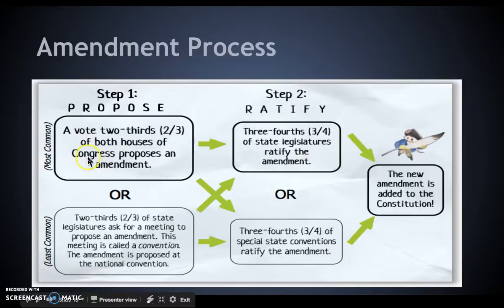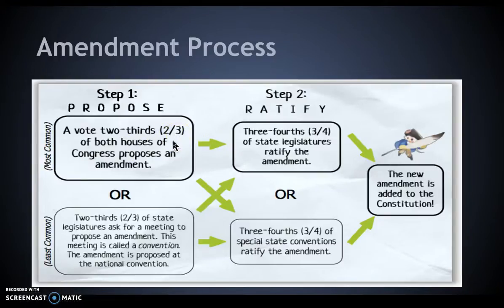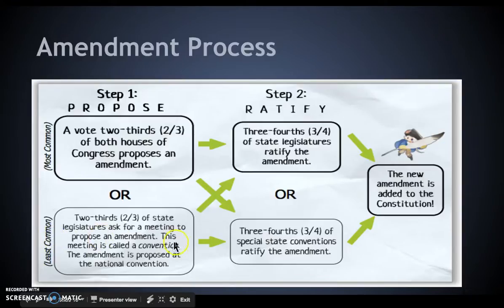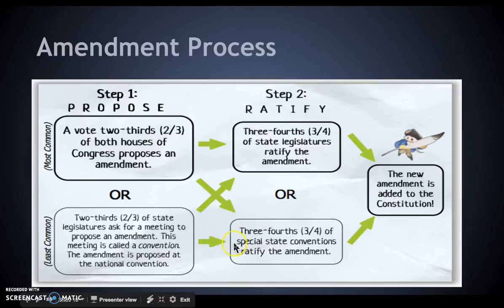The amendment process works like this. The most common route: two-thirds of both houses of Congress — the House of Representatives and the Senate — must propose an amendment with a supermajority. Then three-fourths of all state legislatures, like Ohio's General Assembly, must ratify it, and then we have a new amendment. A lesser-used route is two-thirds of states asking for a convention to propose an amendment, and three-fourths of those state special conventions could ratify it.